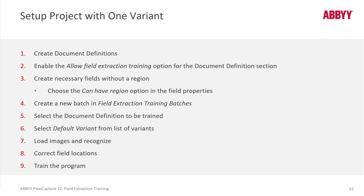Setting up a project with one variant: the first thing you need to do is create document definitions. Those document definitions need to have a section where the Allow Field Extraction Training option is selected. Then you create your necessary fields without a region, and then click on the General tab and select Can Have Region.